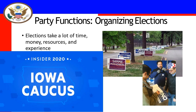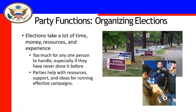Parties also have to organize elections. A terrible example was the Iowa caucus in 2020, which was completely botched — people didn't know the results for almost two weeks. Organization is vastly important. It takes money, time, experience, and order. You can't have one person just organize it all — getting the word out, handling paperwork, getting people to work the political polls requires a mass network and giant connectivity.